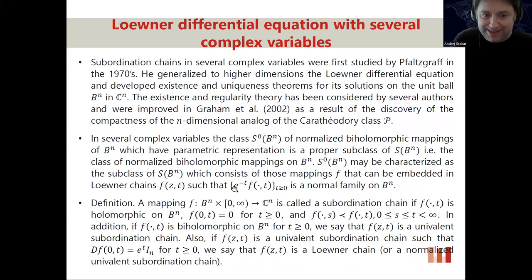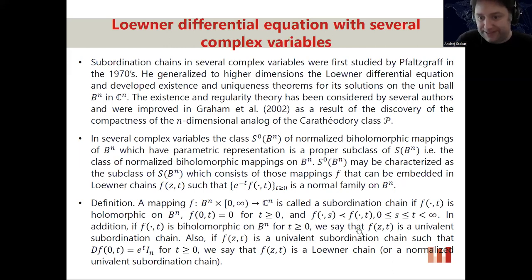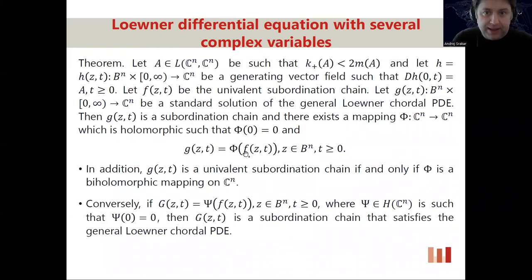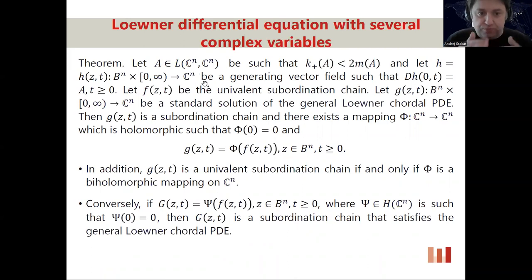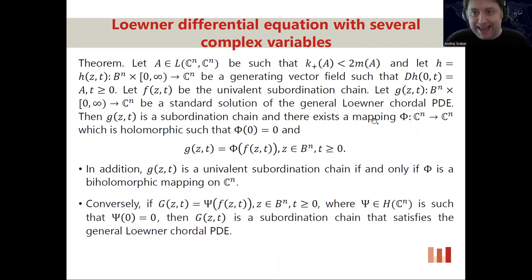A mapping f is called a subordination chain if f is holomorphic and satisfies the required properties. If it is additionally biholomorphic on C^N, we say f is a univalent subordination chain. If it is a univalent subordination chain with those properties, we say f is also a Loewner chain. Some lemmas proved in earlier articles on this equation for several complex variables can be improved. For instance, given a mapping A from C^N to C^N, one can derive subordination chains. There exists a mapping which is holomorphic and a univalent subordination chain, and this subordination chain satisfies the general form of the Loewner chordal PDE for several complex variables.